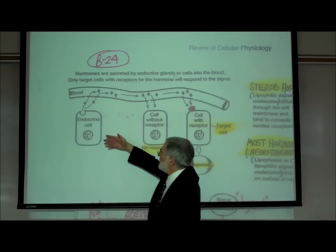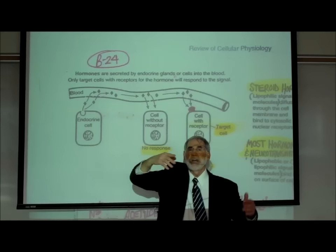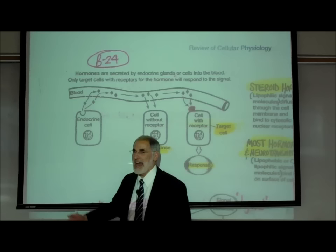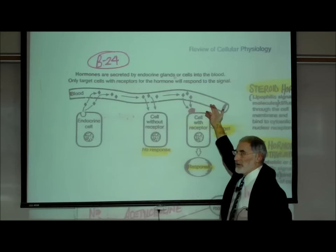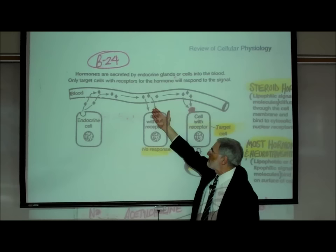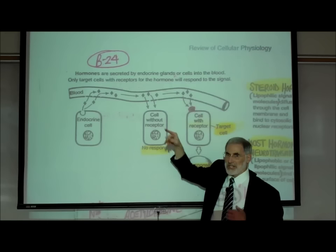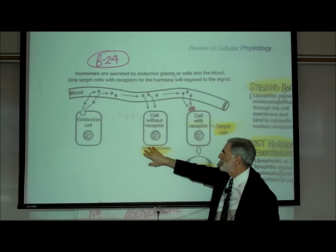On the top left of page B24, it shows an endocrine cell secreting a hormone into the bloodstream. As an example, let's imagine that's insulin being secreted by a pancreatic beta cell. The insulin is circulating in the bloodstream and flowing past many cells. Here it shows a cell that has no insulin receptor sites, so insulin would have no effect on it.